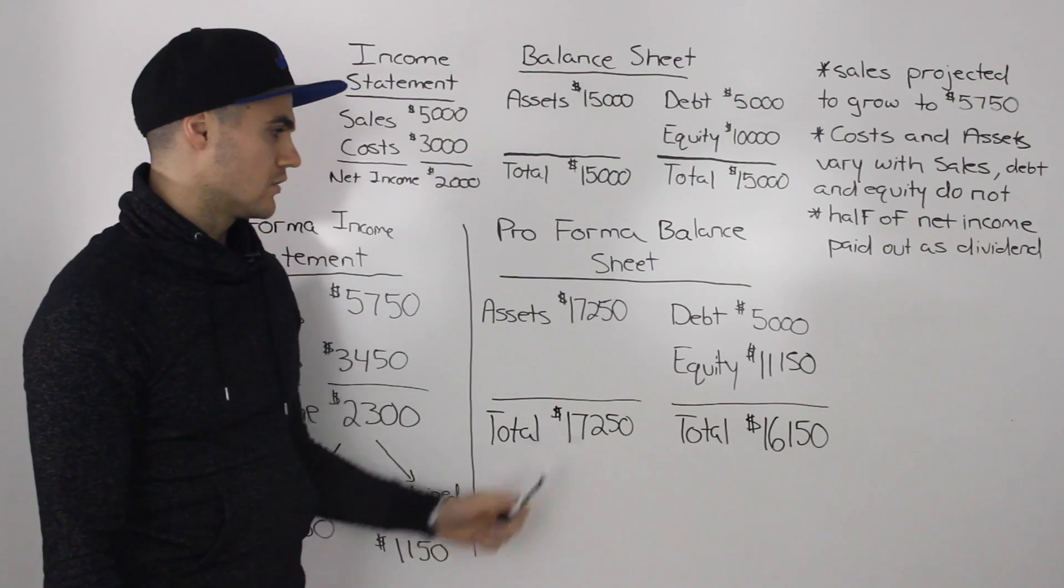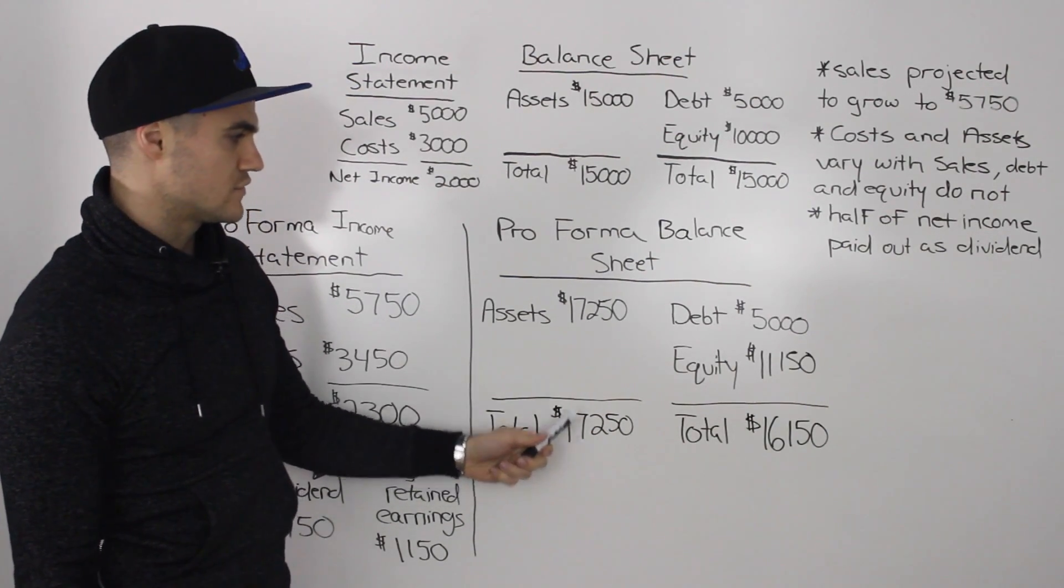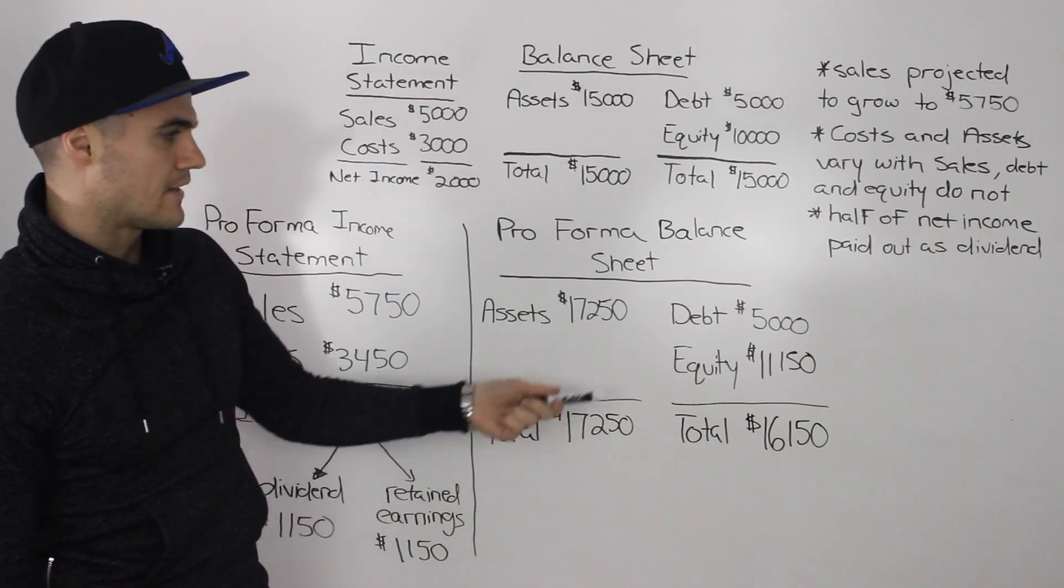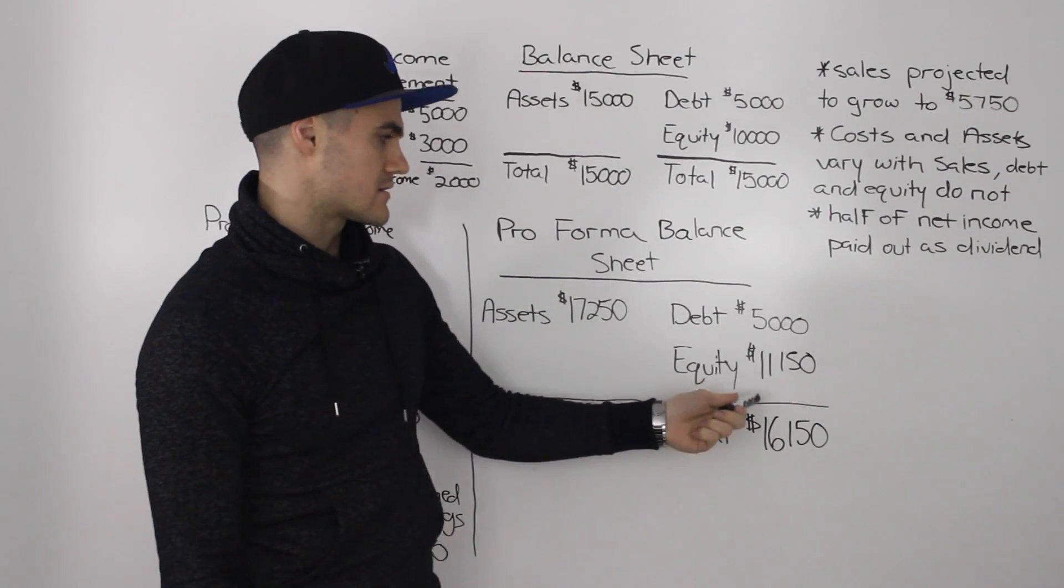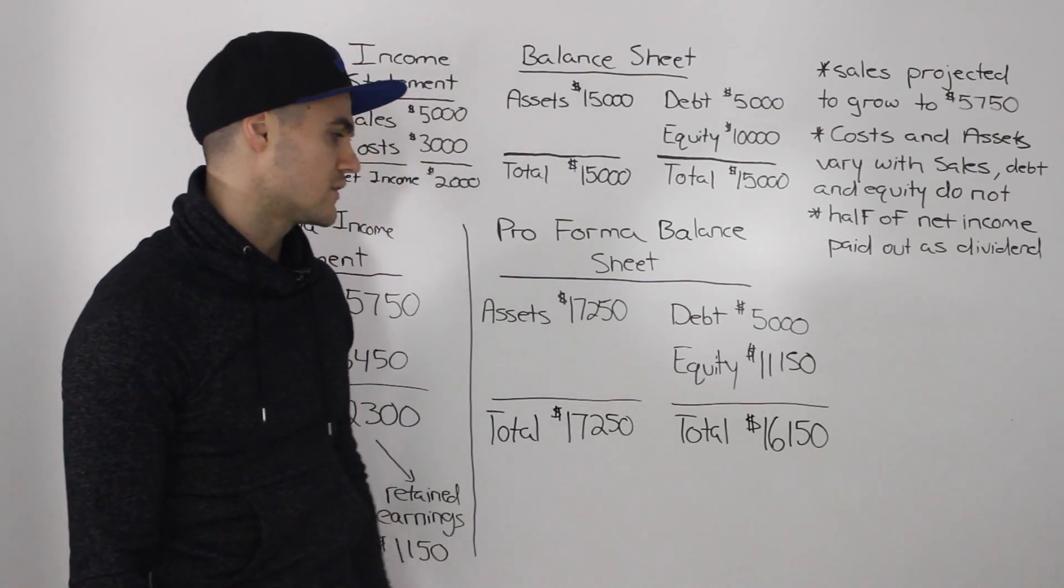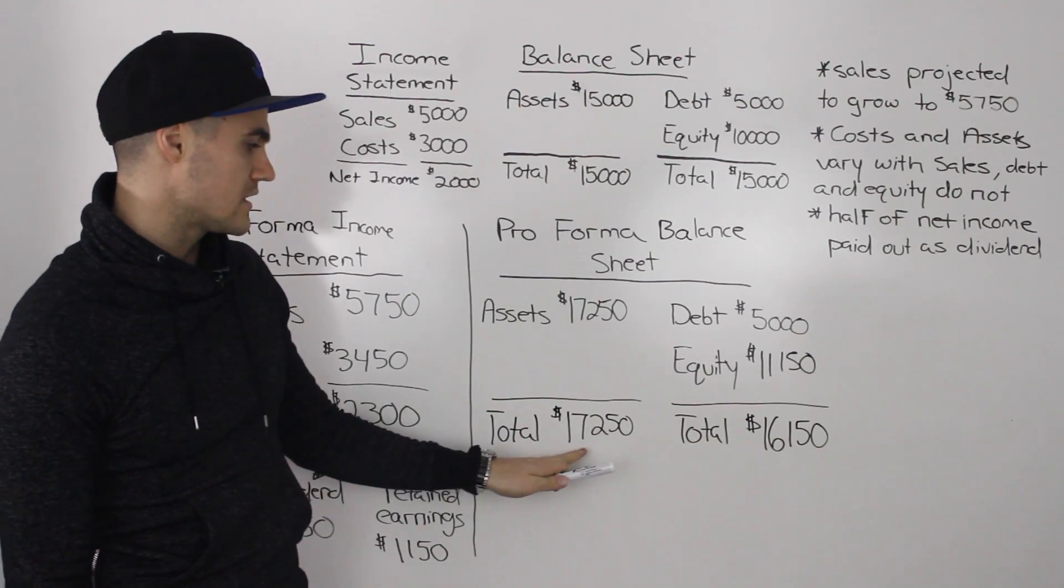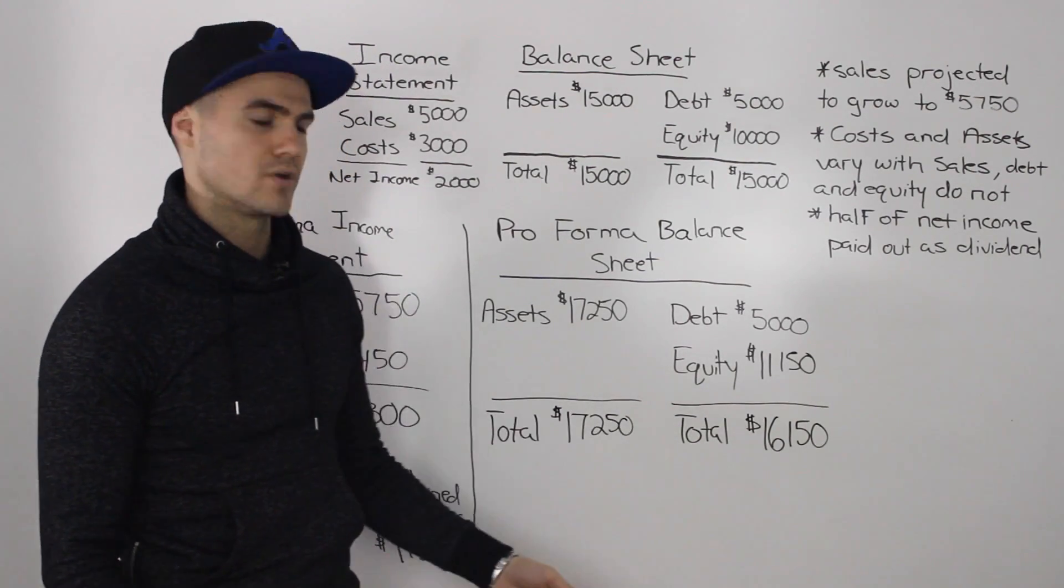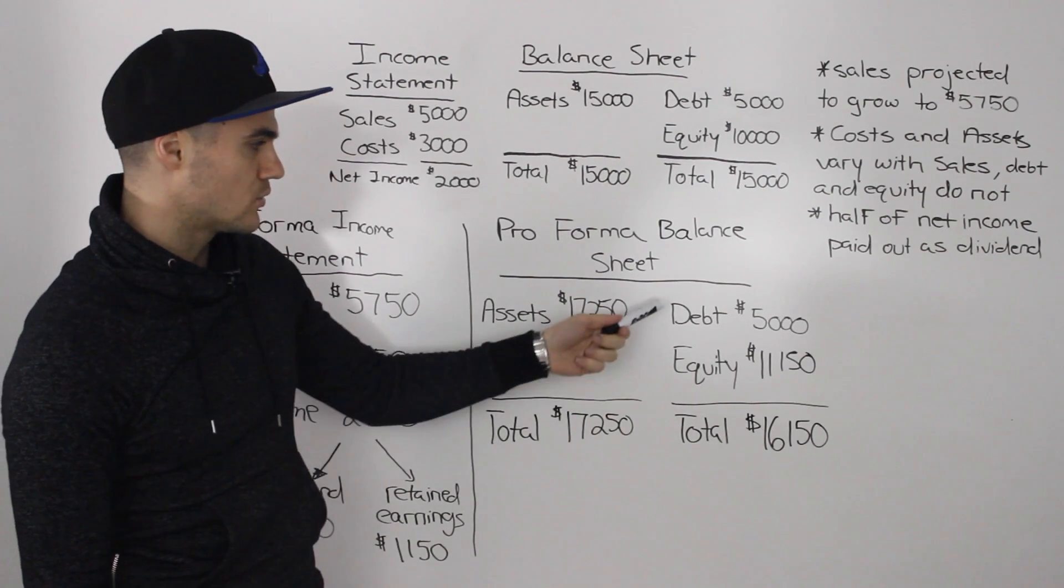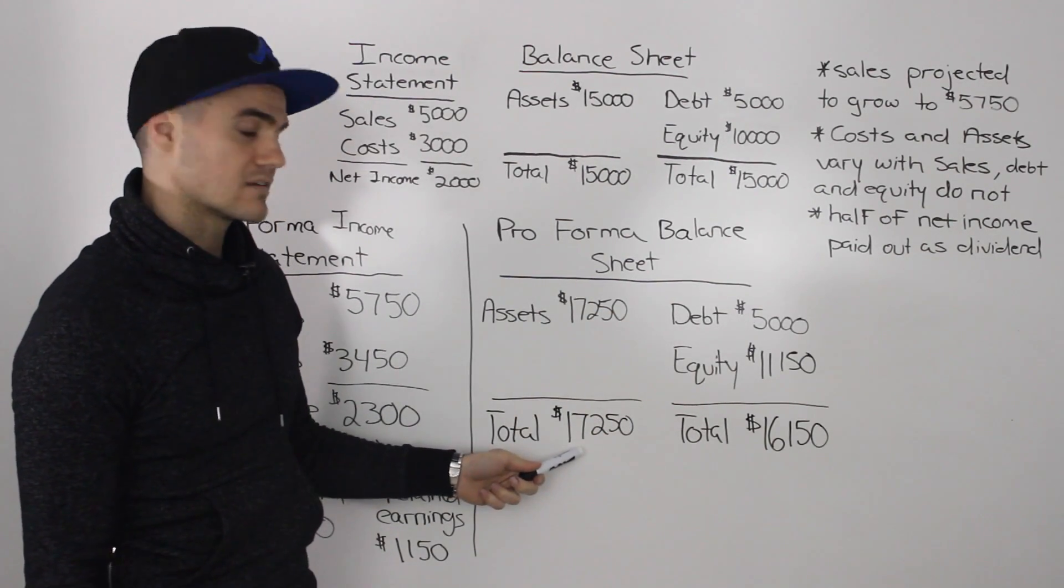So then adding all of the sides on the balance sheet, the left side would add up to $17,250, it's just the assets. And then the right side, the debt of $5,000 plus the equity of $11,150 would give us $16,150. But now we run into a problem because notice how the left side and the right side do not balance. We basically don't have enough debt and equity to balance off with the asset figure here.